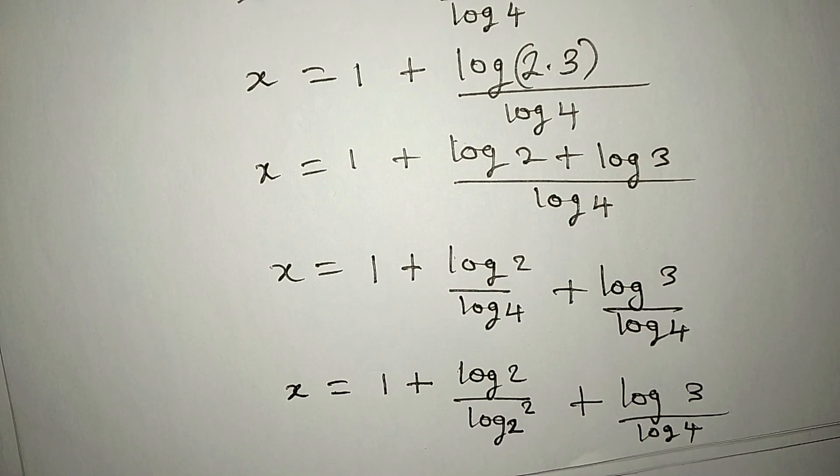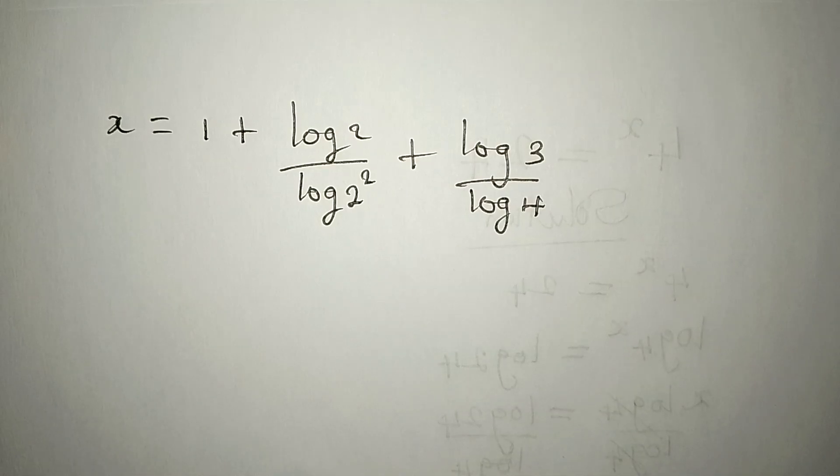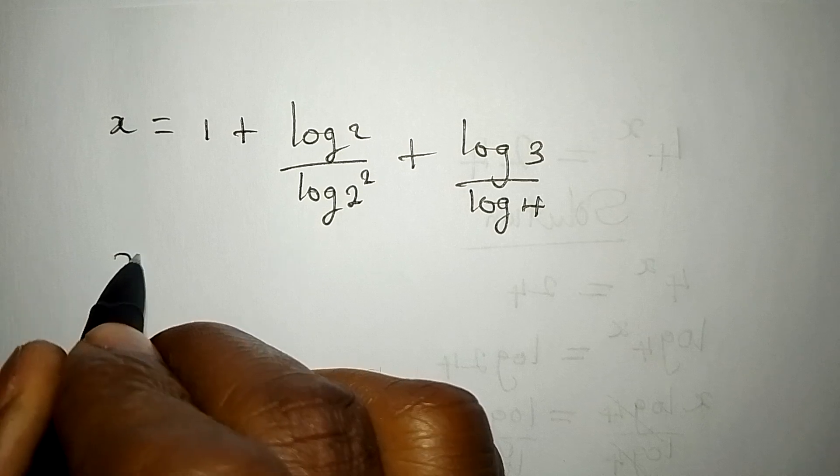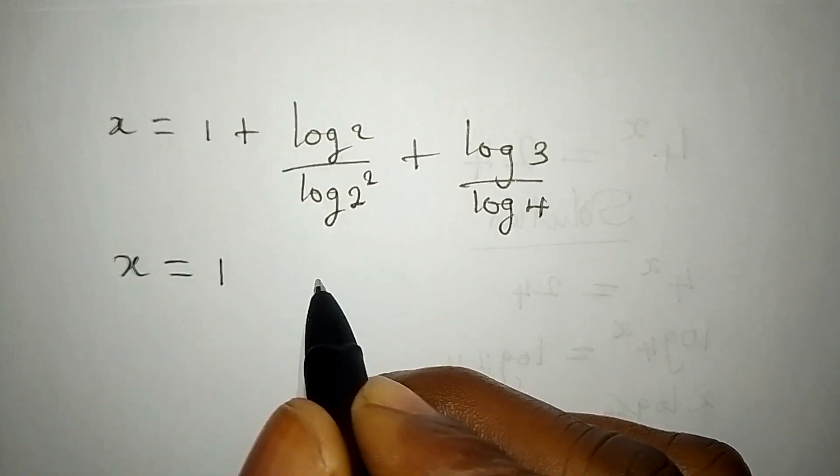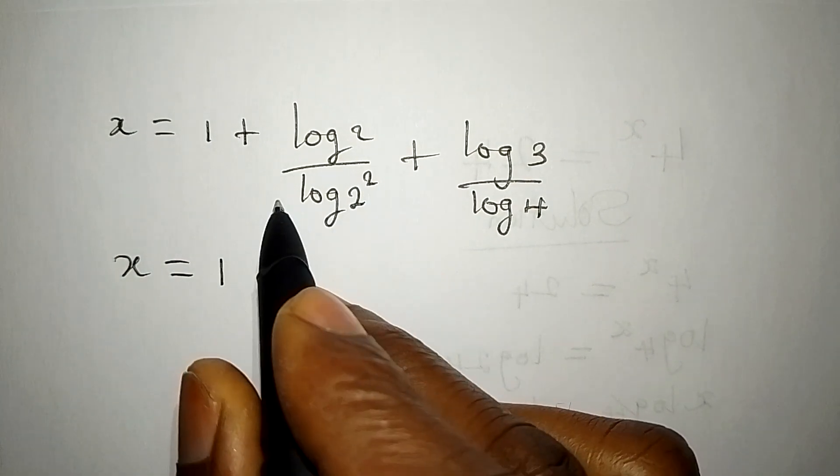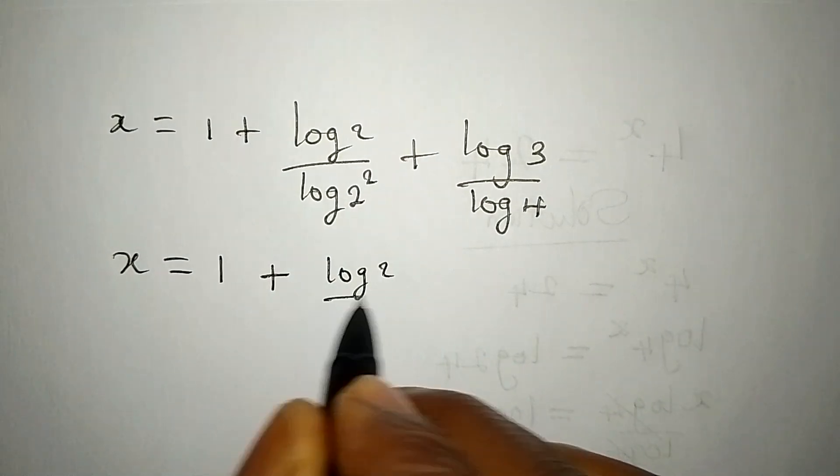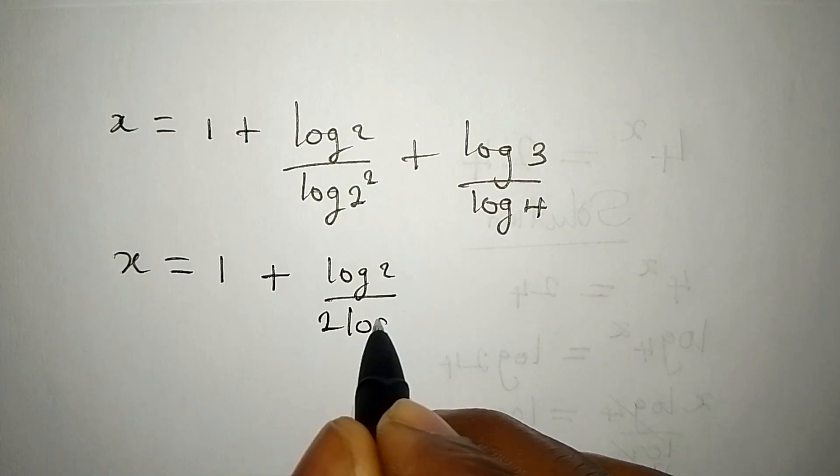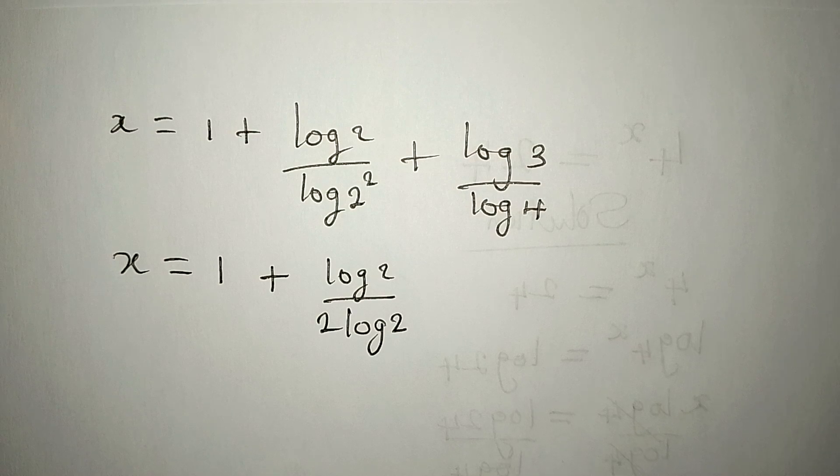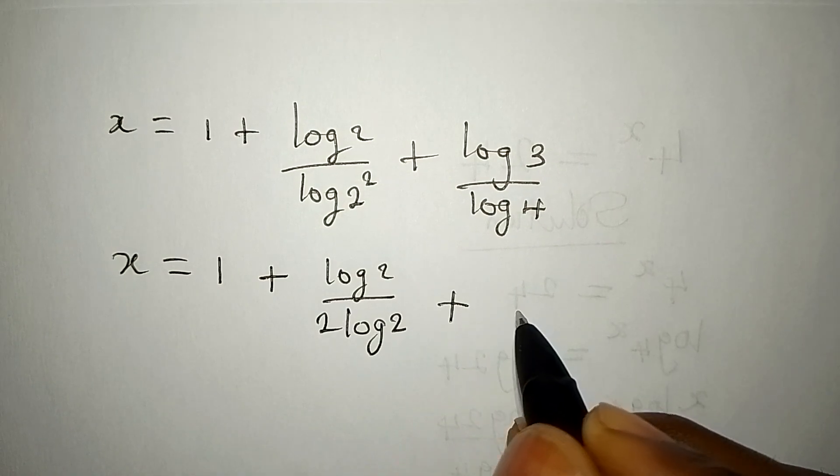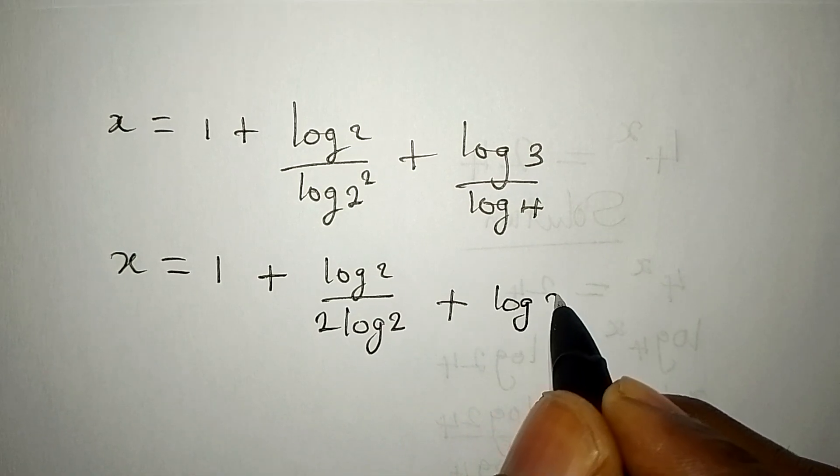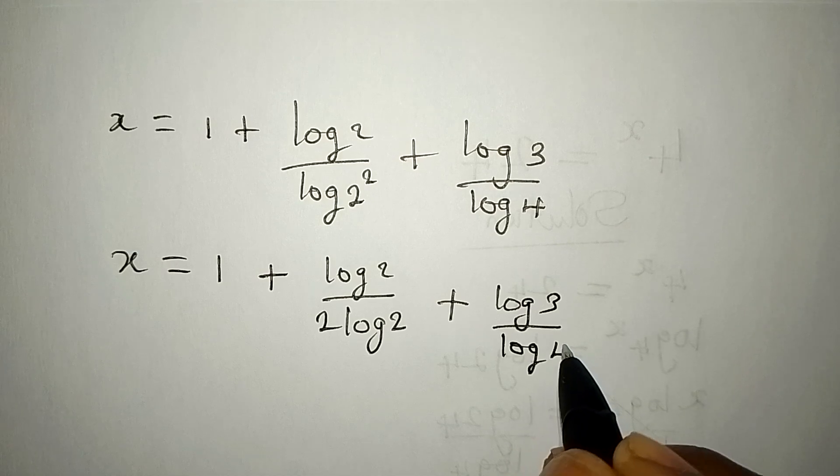Let's continue. So, x will be equal to 1. Now, this power here can go behind. So, I'll have log 2 first over 2 log 2. Then, we have plus log 3 over log 4.